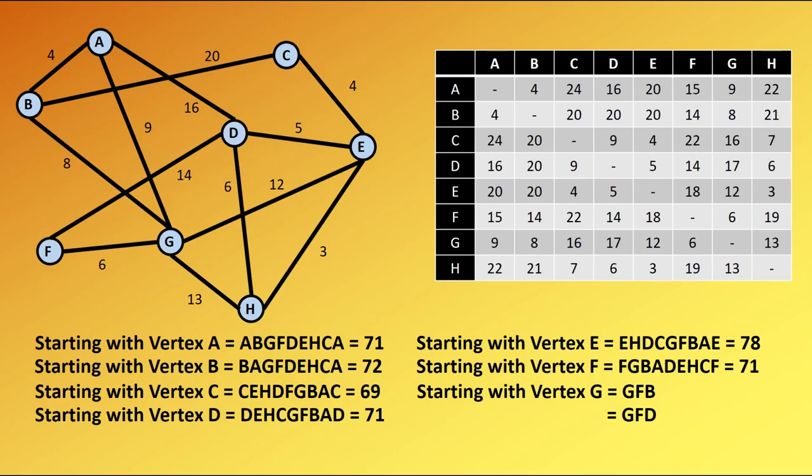Starting with G, we have a slight problem. When we do G, we go from G to F for a total of 6, and then when we're at F, if we look down the F column, we can see that we can get to both B and D in a distance of 14. We don't just choose at random because we run the risk of missing out on a better answer. Remember, we're looking to improve our upper bound. So what we have to do is follow both of them through and see which one is the better one.